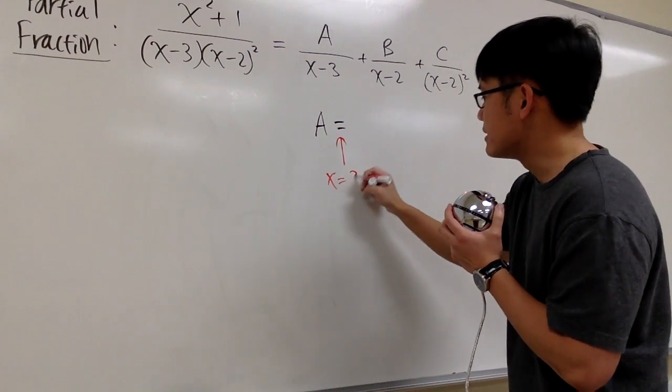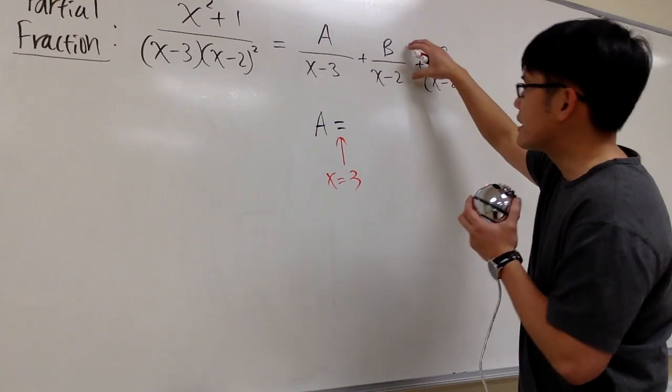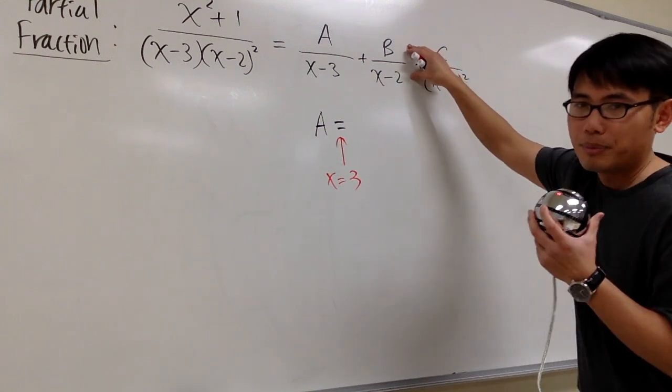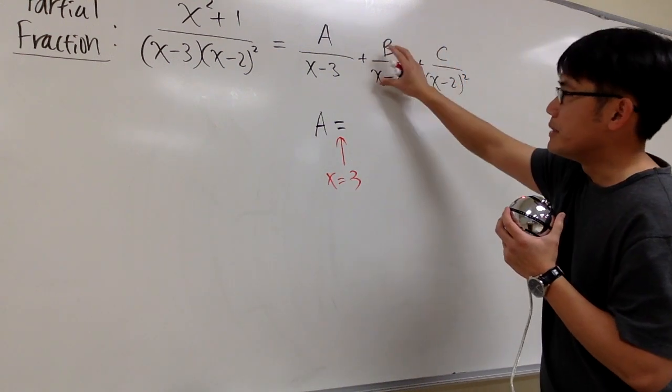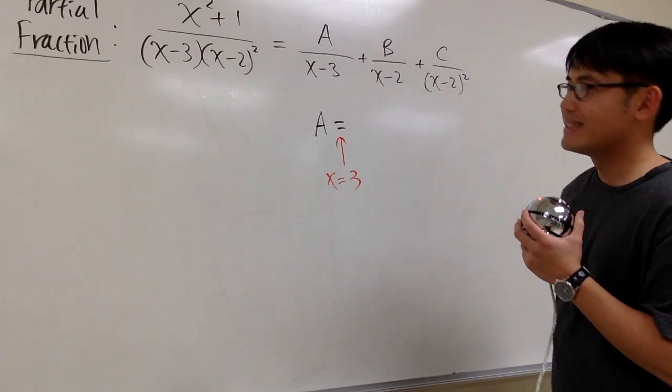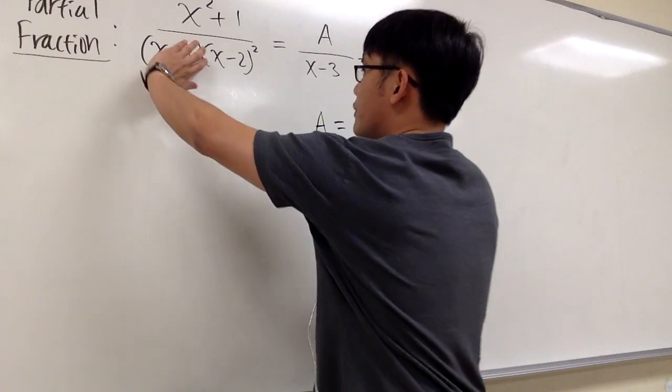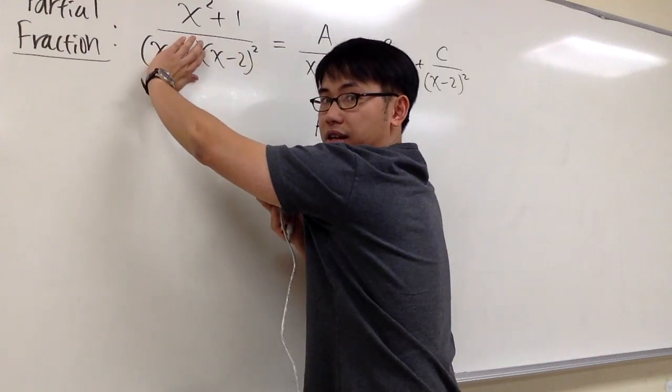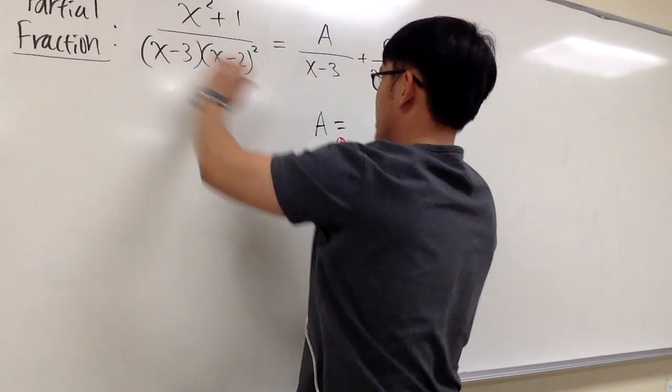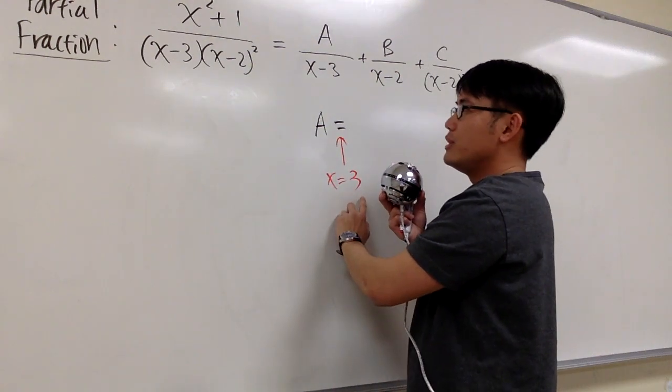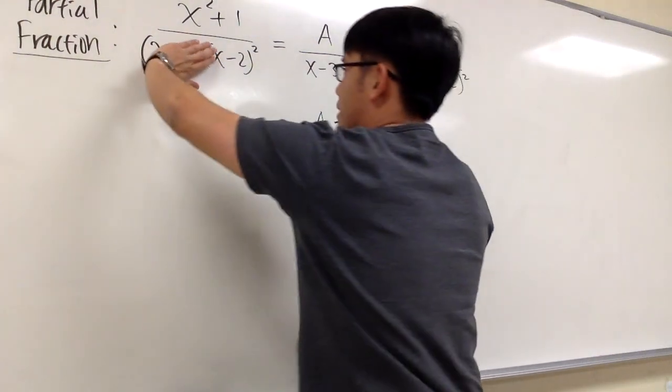Well, I just did how to plug in x is equal to 3. Because if you have a factor x minus 3 right here, the moment you plug in x is equal to 3, that will be 0. Likewise, that will be 0. All we need to do is to solve for A, go back to the original expression, cover up the same denominator together. And plug in 3, because 3 is the one that will make that 0.